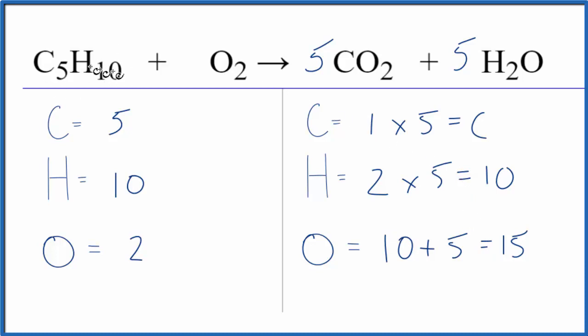With these combustion reactions—hydrocarbons plus oxygen giving us carbon dioxide and water—we can actually use fractions. Here's how that works: two times something will equal fifteen, and two times fifteen over two equals fifteen. So if we put a coefficient of fifteen over two right here, this equation is balanced.